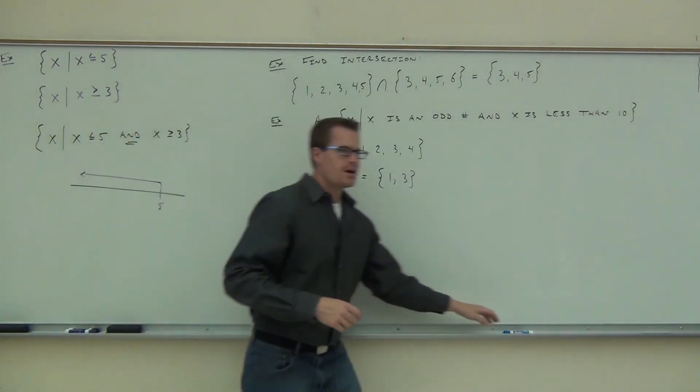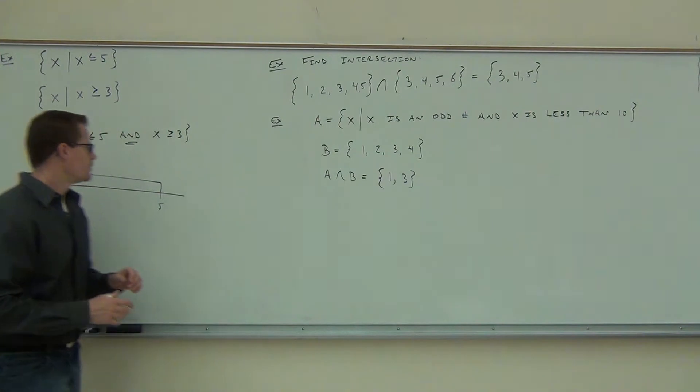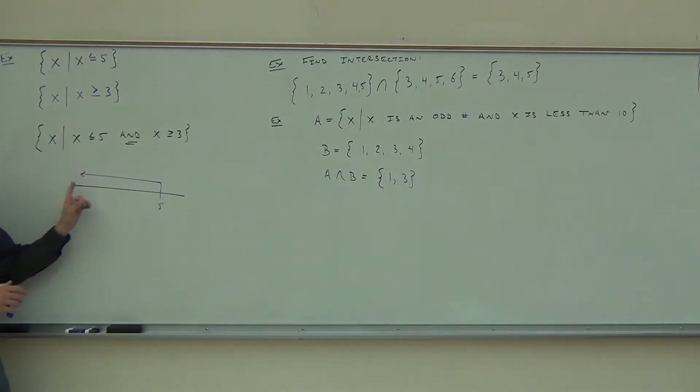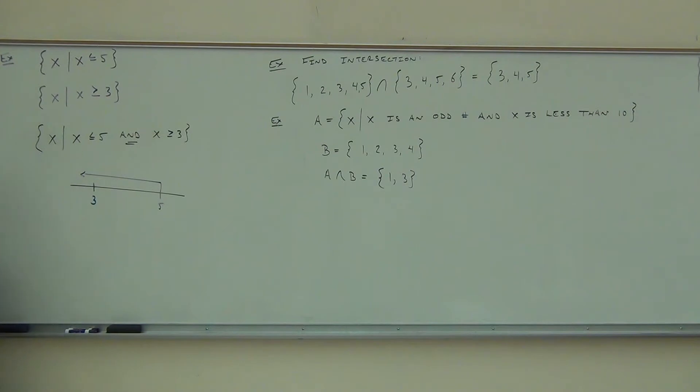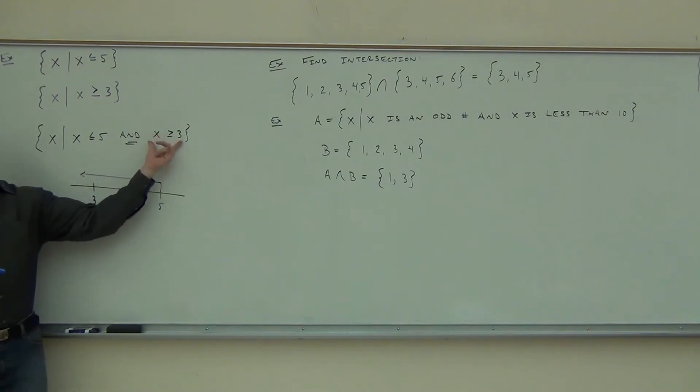And if we have x is also greater than 3, where's 3 in relation to 5? It's to the right or to the left? So it doesn't have to be like to scale or anything. There's 3. Where are the numbers greater than 3?